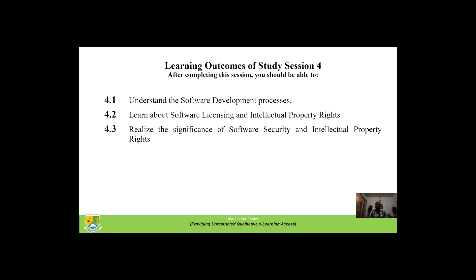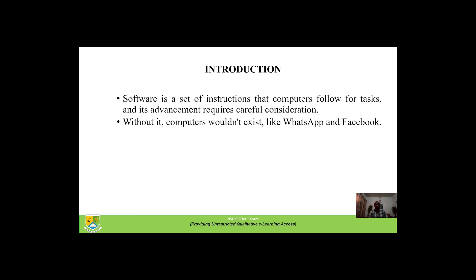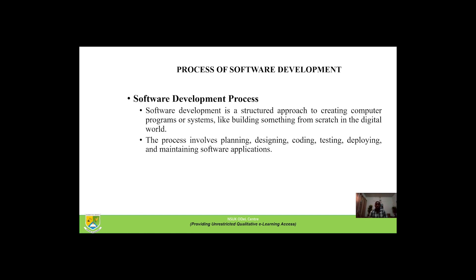We also want to realize the significance of software security and intellectual property rights. As an introduction, remember in the last class we looked at software, where we said software is a set of instructions that computers follow. Its advancement requires careful consideration, and it basically manages or controls the computer — like WhatsApp and Facebook.